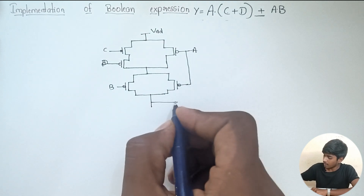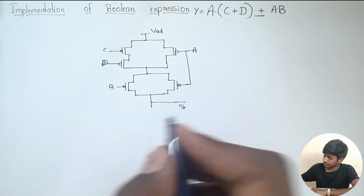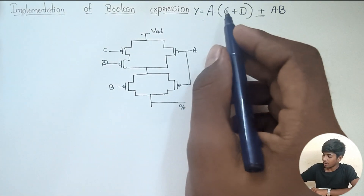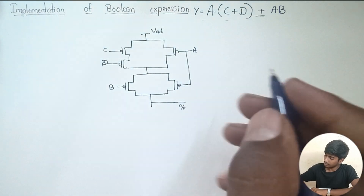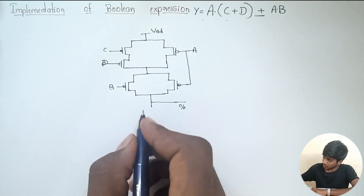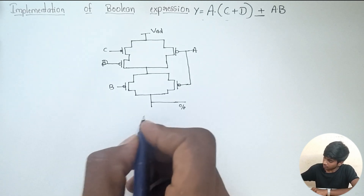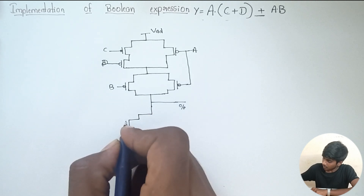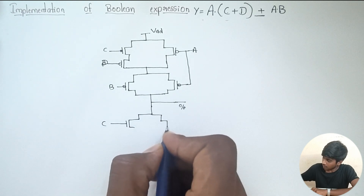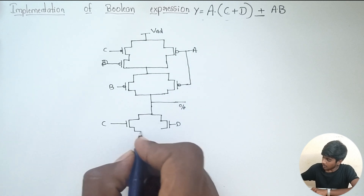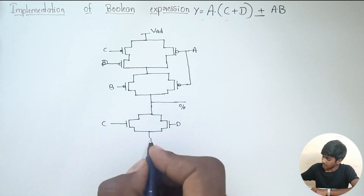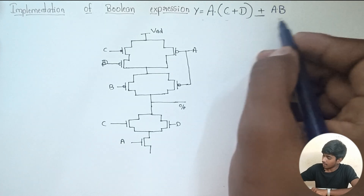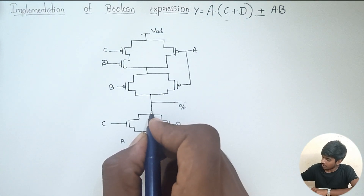Pull-up network is over where output is connected. For the pull-down network: C plus D should be in parallel, and C plus D should be in series with A. This is one part and A plus B should be again in parallel.